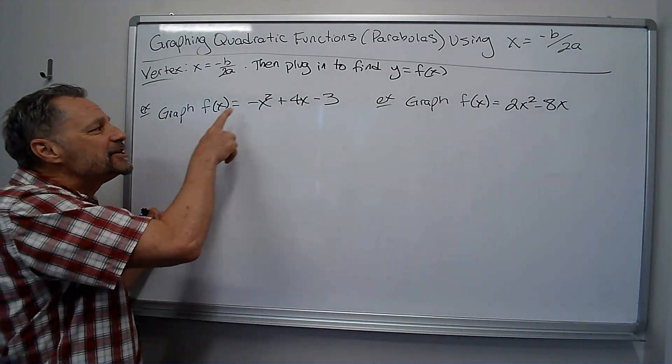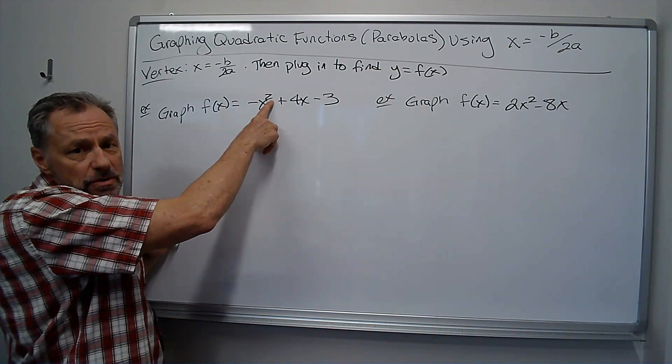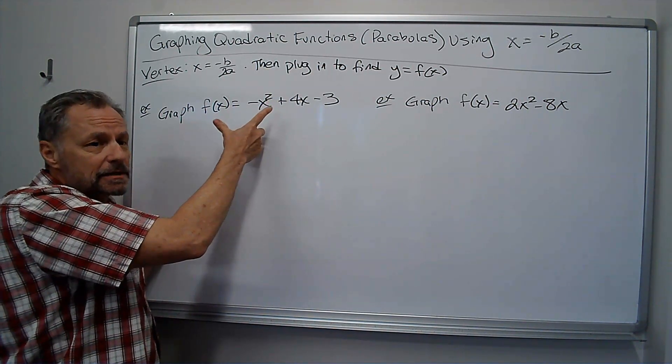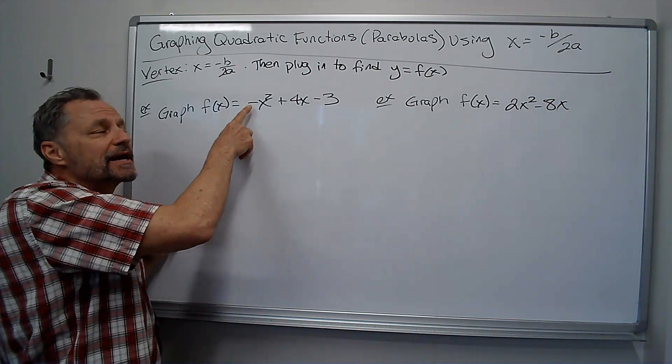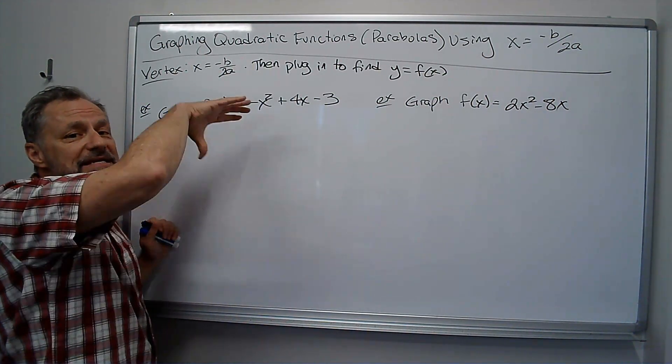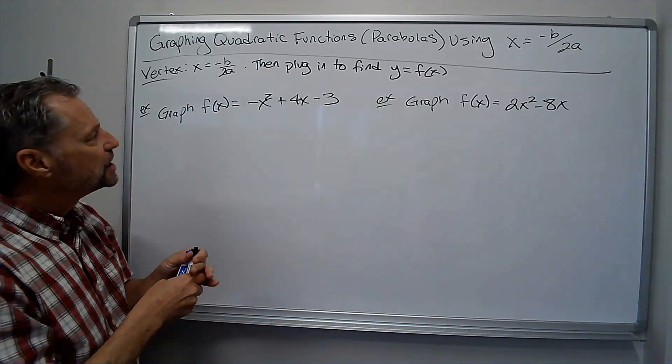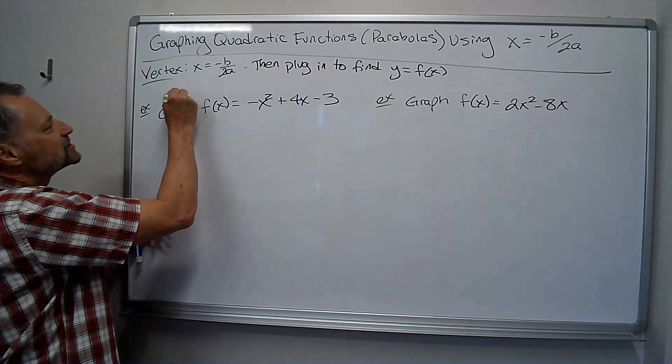So first of all, I know this is a parabola because the highest term is 2, it's an x squared. It's a negative x squared. The negative in front of the x squared means it's been flipped over. It's an upside down parabola. So I know right away this graph is going to look something like this.